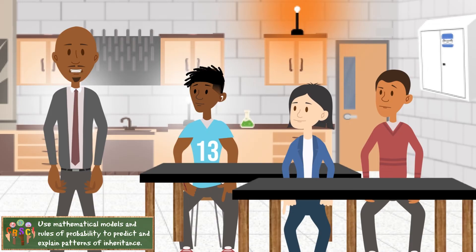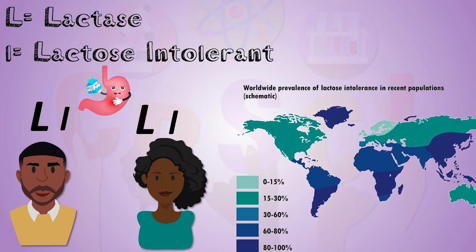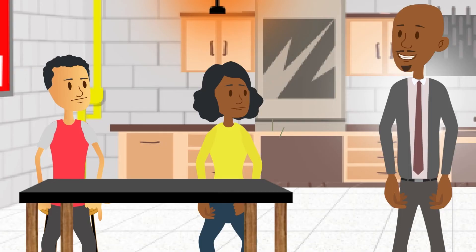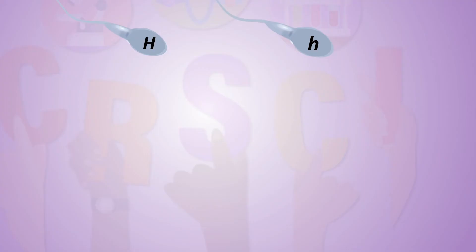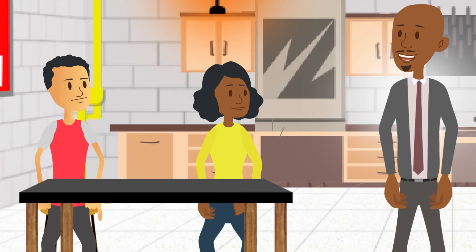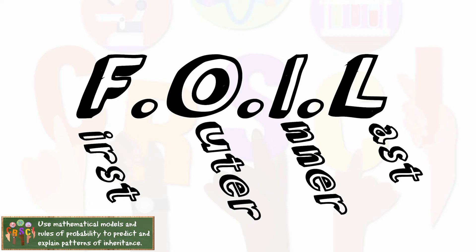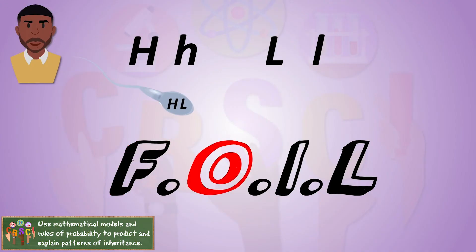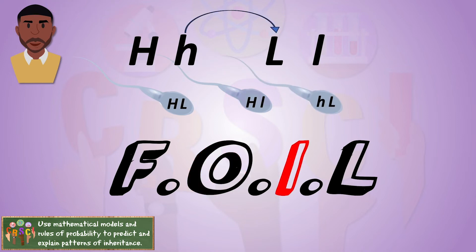Let's say both of your parents were carriers of the allele for lactose intolerance — meaning they're heterozygous. We can use a dihybrid cross to figure out the percentage of outcomes for both traits. Instead of two possible outcomes for each parent we now have four, which means a total of 16 for their offspring. We'll use FOIL from algebra to determine the possible genotypes each gamete could produce: combine the first alleles, then first with outer, then the inner two, and finally inner with last.